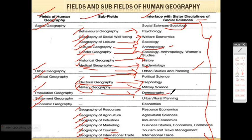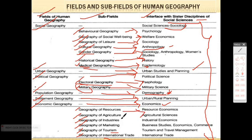Demography is very important — it will keep coming up in our book. Demography is the study of population, and in geography it becomes Population Geography. Settlement Geography has a relationship with urban or rural planning. Economic Geography has a relationship with economics, which is also a social science. The sub-fields of Economic Geography correspond to: Geography of Resources — resource economics; Geography of Agriculture — agricultural sciences; Geography of Industries — industrial economics; Geography of Marketing — business studies, economics, and commerce; Geography of Tourism — tourism and travel management; and Geography of International Trade — international trade.